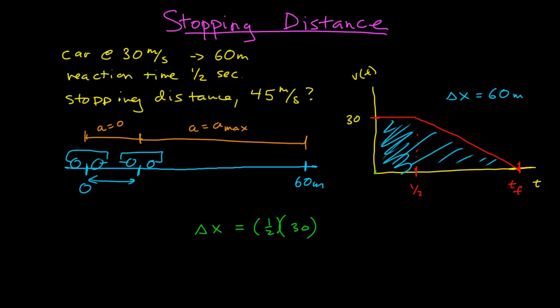The area of the triangle is one-half times the height — 30 meters per second — times the base, which is this time interval delta T, which is unknown. So the total is 15 plus one-half times 30 times delta T, and this equals 60. This first relationship gives me the time difference delta T, and I can go ahead and calculate what that is.